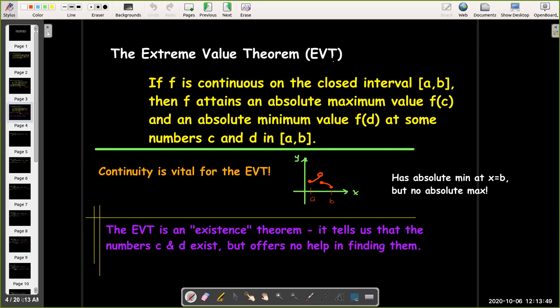The EVT is what we call an existence theorem. It tells us that these numbers c and d exist, but offers no way of actually finding c and d. So that's what we're going to be looking at in the next couple of videos. How can we find those numbers c and d where the absolute minimum value occurs and the absolute maximum value occurs?